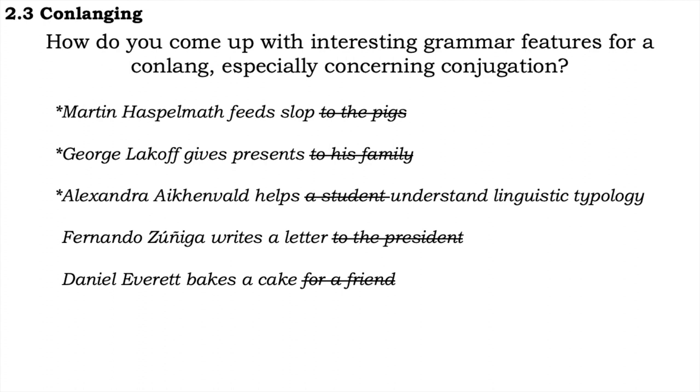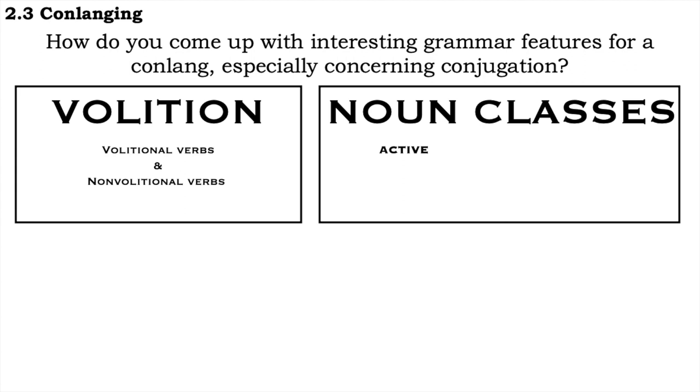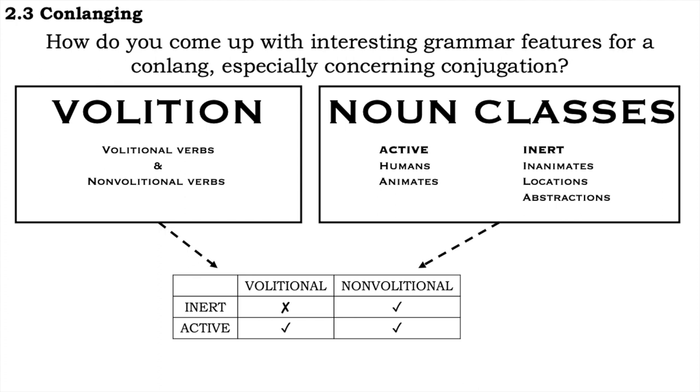Polypersonalism out of the way, I also knew I wanted a volition difference in verbs as an essential quality of them. At the same time, I had a few noun classes that I could divide into two superclasses: active, which had humans and animates, and inert, which was inanimate, locations, and abstractions. It seemed a natural consequence to me that inert nouns could never be the subject of a volitional verb, as inert things cannot exercise will, while active nouns could be the subject of both a volitional or non-volitional verb, as they can perform actions with or without will.